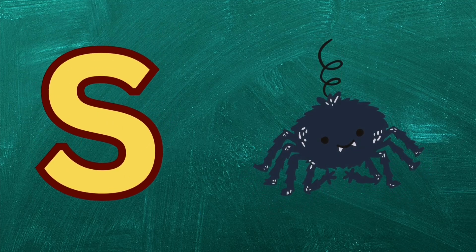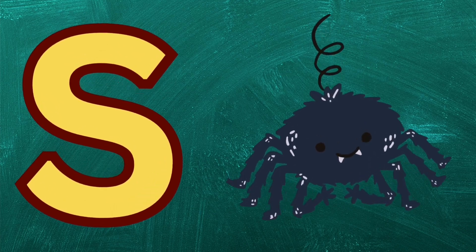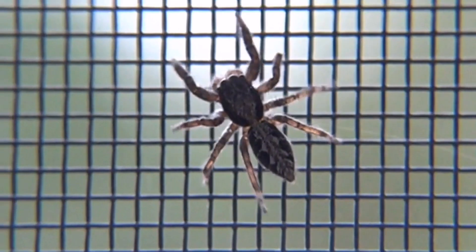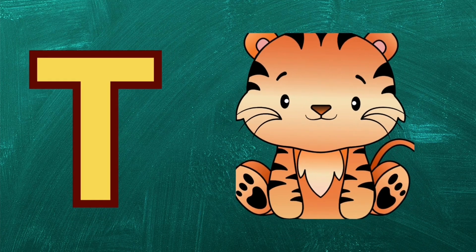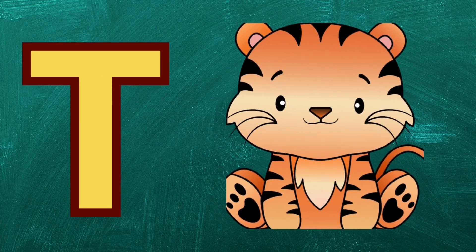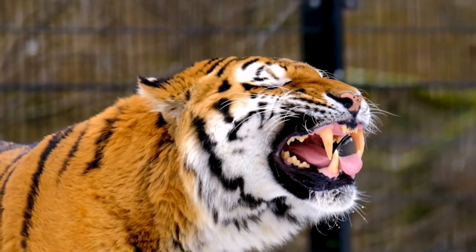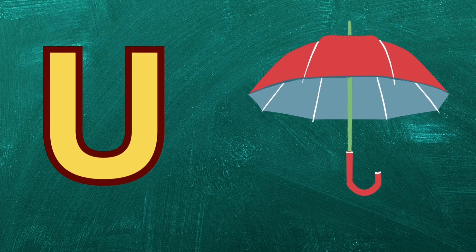S for spider. E for tiger. U for umbrella.